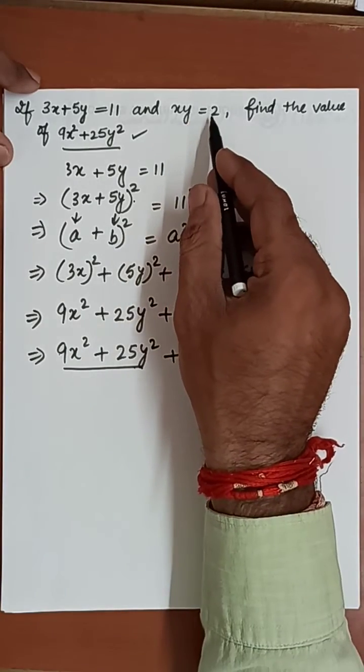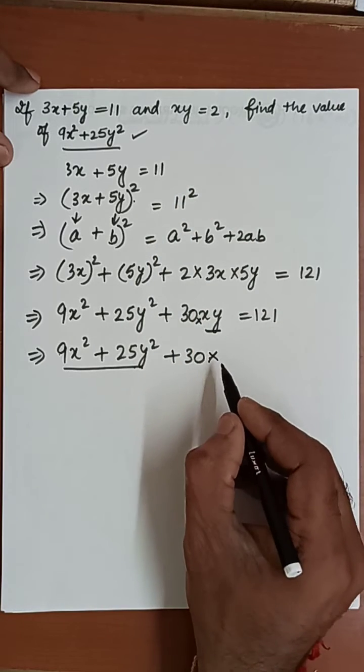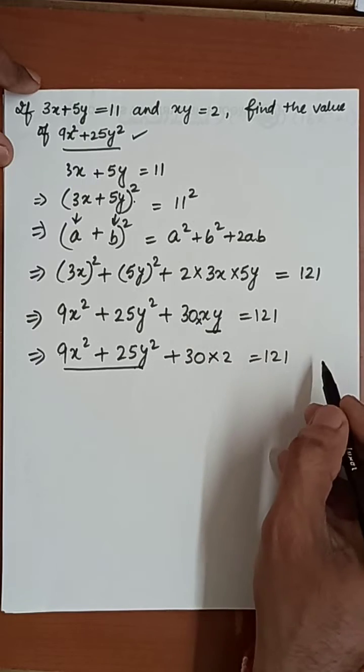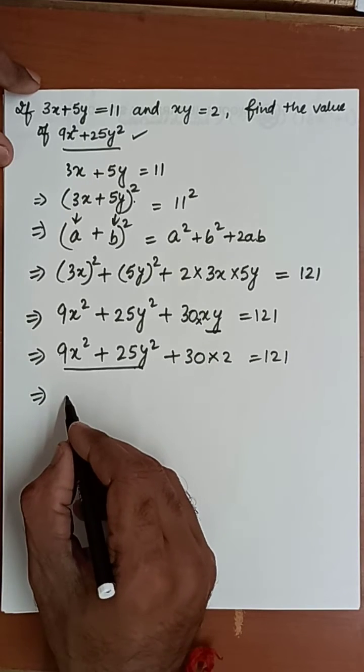If you are looking, 9x square plus 25y square plus 30 into xy. Put the value of xy. The value of xy is given as 2, so 30 into 2 is 60. We will transpose 60 to the other side.